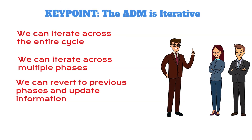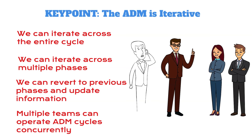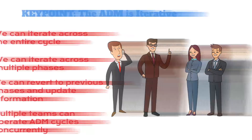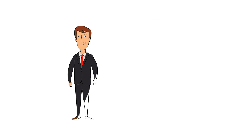For example, we could go back from phase E to phase B when we find that the technologies we have at our disposal cannot meet the needs of the design. We can also iterate as separate teams across the full life cycle concurrently and then sync our findings at the end of the day.